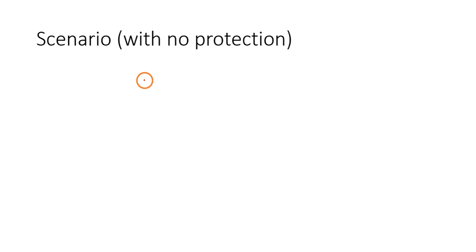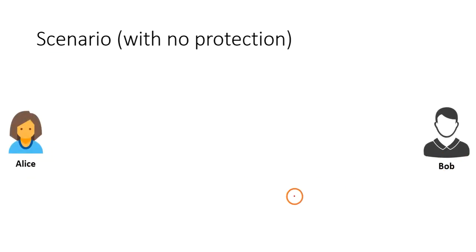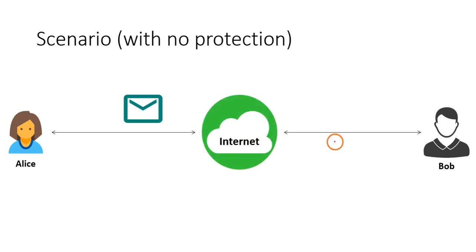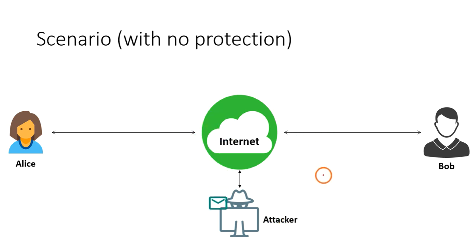Before discussing encryption and decryption, let me show you a scenario where there is no protection. There are two users, Alice and Bob, communicating through the internet by passing messages. There is also a third party — an attacker — who is connected to the internet and is reading the messages being communicated between Alice and Bob.